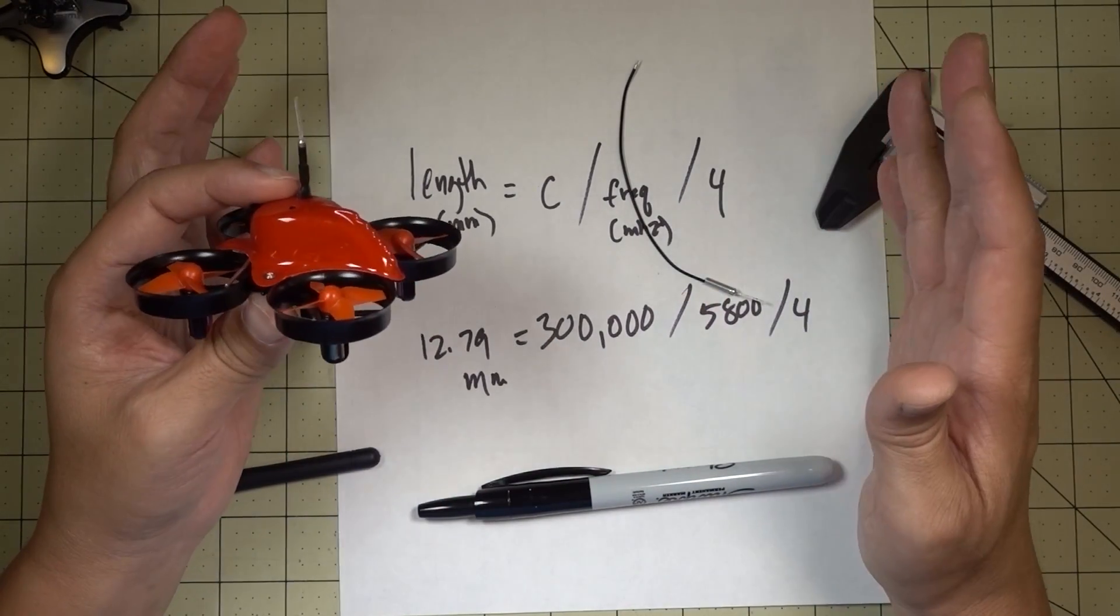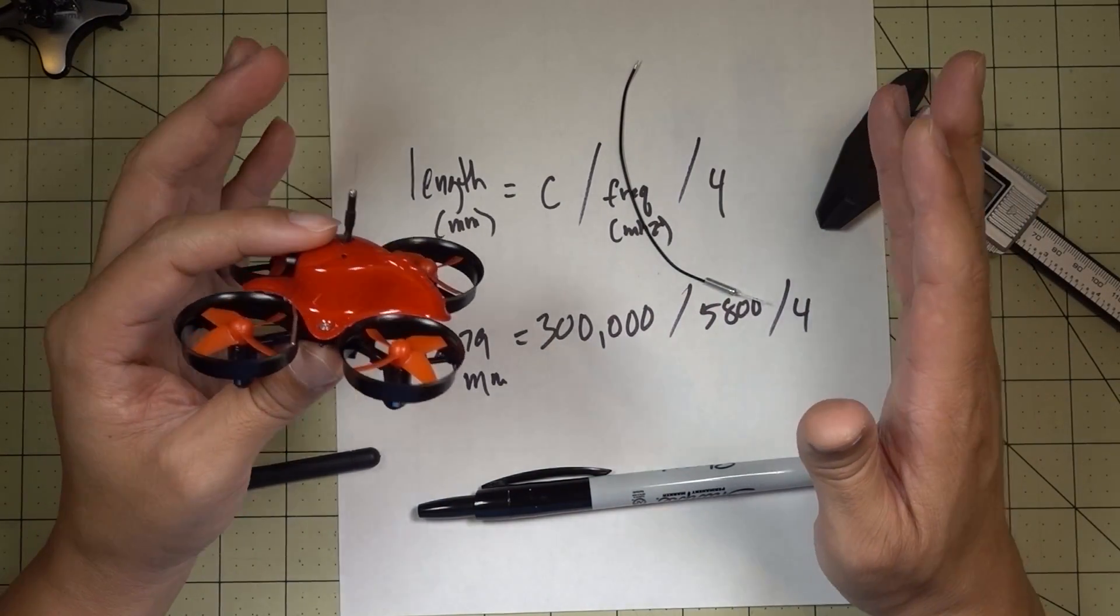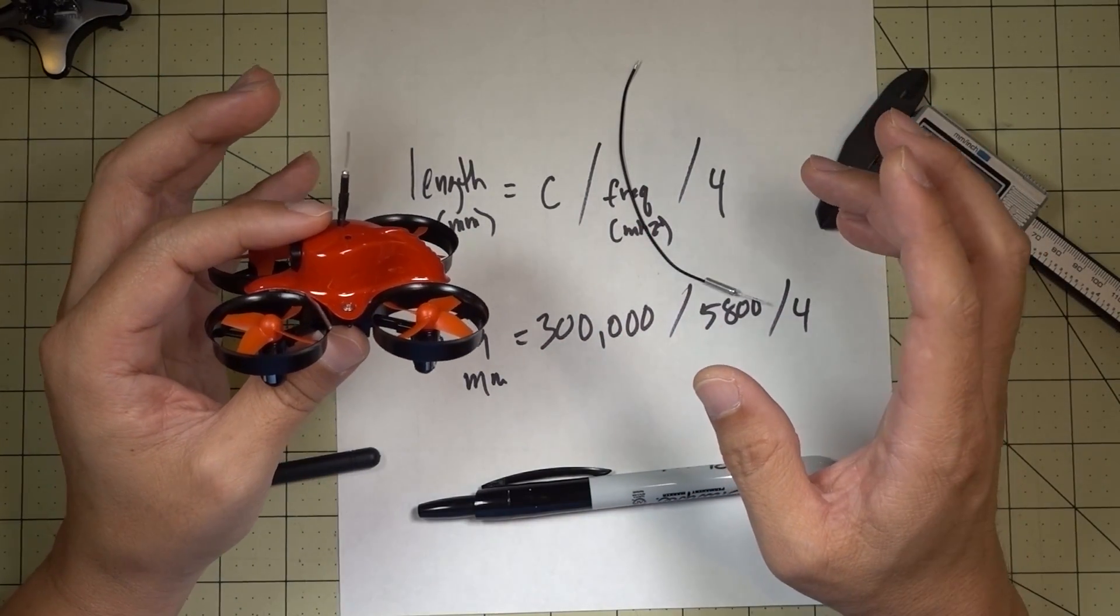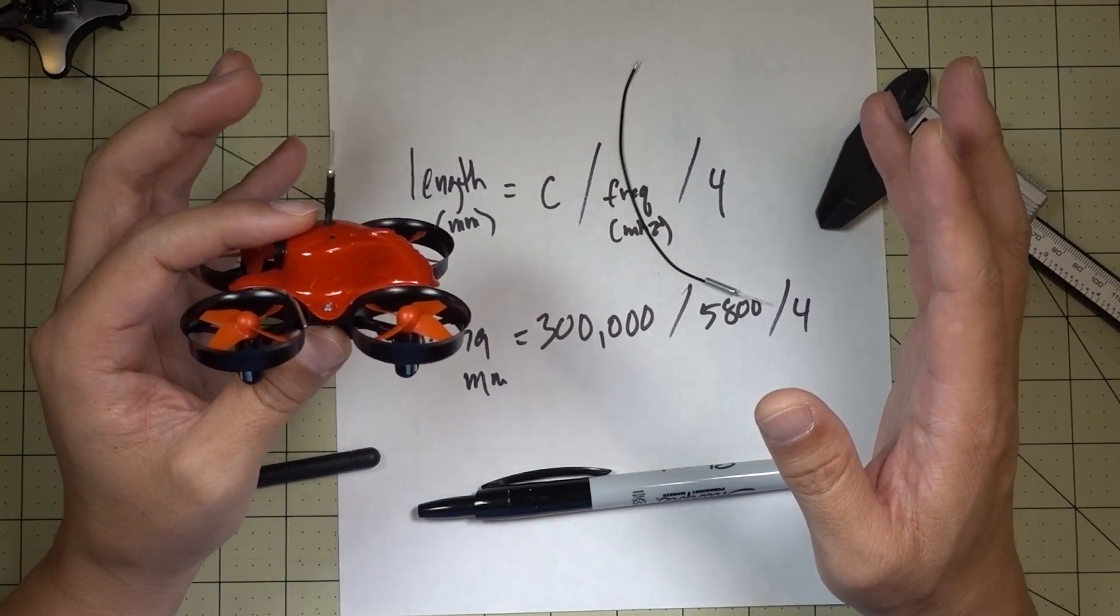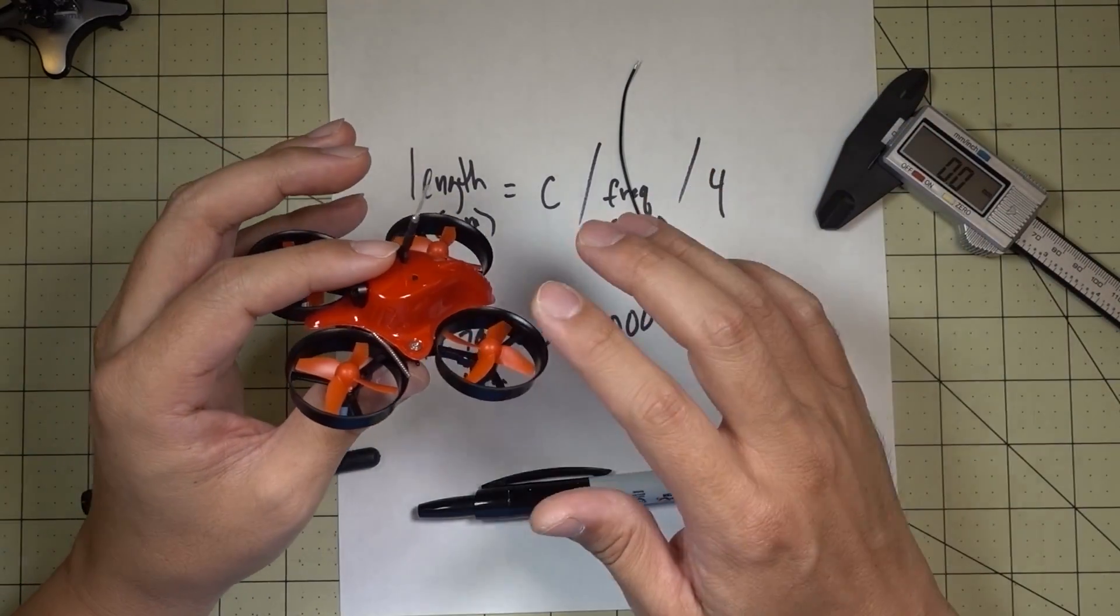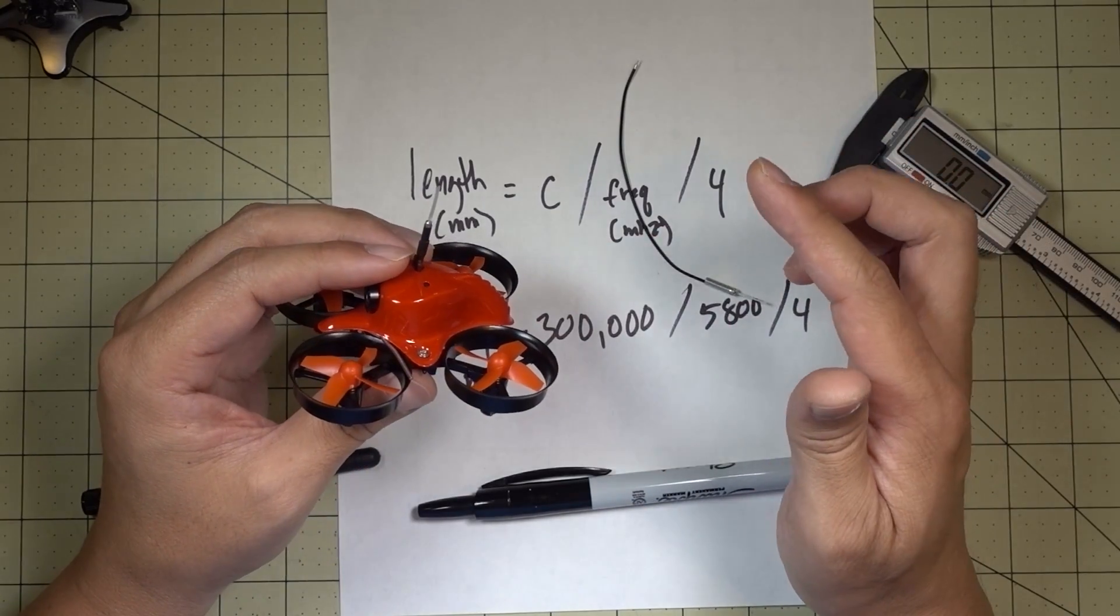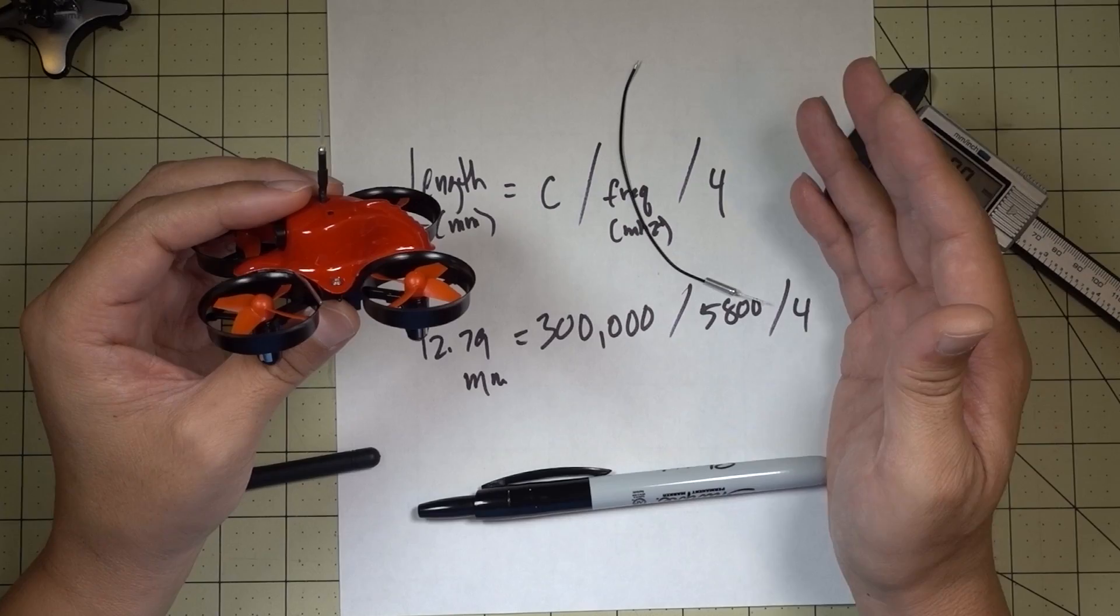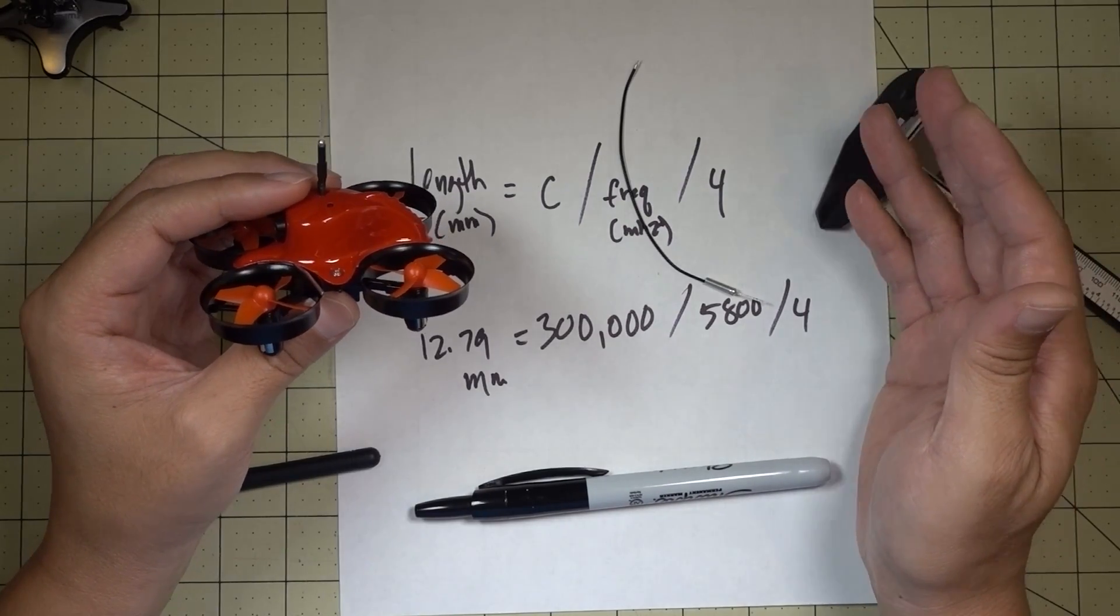So I hope this makes sense to you guys. It's kind of technical, but this is the way analog video works. So if you want good reception on your micros with these little linear whip antennas, this is what you got to do. Anyway guys, I hope this was helpful. Let me know if you have any questions, and I'll talk to you guys in the next one.